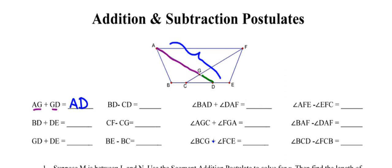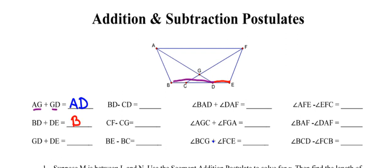We can approach each of these in a similar fashion. In the next one, the distance between points B and D is the first piece, and the distance between points D and E is the second piece, which makes the whole thing the distance between points B and E.